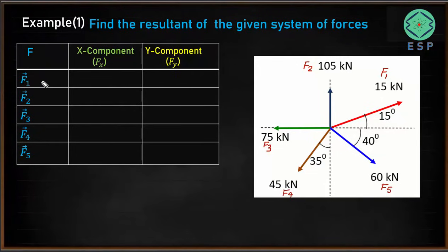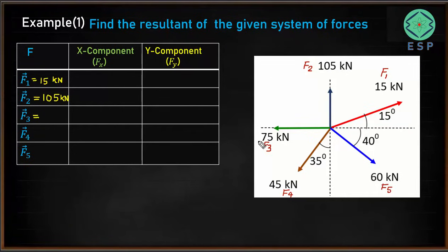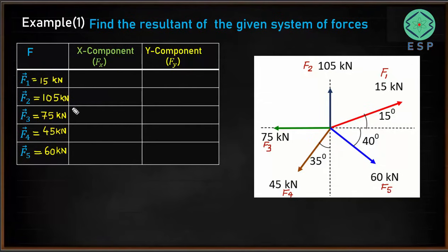F1 is 15 kN, F2 is 105 kN, F3 is 75 kN, and F5 is 60 kN. So we have listed down all the forces. Now we will try to find out their x and y components.